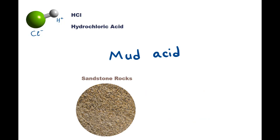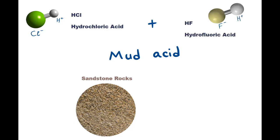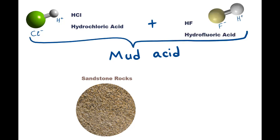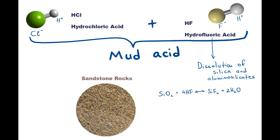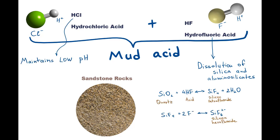In sandstones, we commonly use so-called mud acids, which are essentially mixtures of hydrochloric and hydrofluoric acids. HF works on dissolution of silica and aluminosilicates, and HCl keeps the pH low to prevent detrimental precipitates.